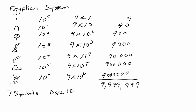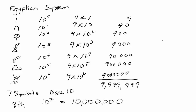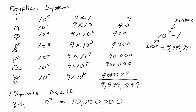The shortcut: imagine an 8th symbol worth 10 to the 7th power. After using all 7 symbols 9 times each, you'd roll over to that 8th symbol, which would represent 10,000,000. So the largest value representable with 7 symbols is 10 to the 7th minus 1, which equals 9,999,999. Notice the base is 10 and the exponent is the number of symbols, 7.